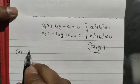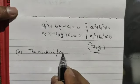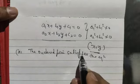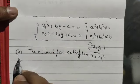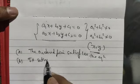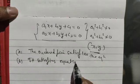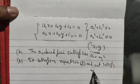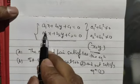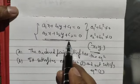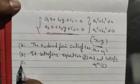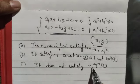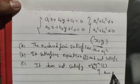First, the ordered pair satisfies both equations — any values of x and y satisfy both equations. The second condition is that it satisfies equation 2 but does not satisfy equation 1. The last possibility is that it does not satisfy either of the two equations.